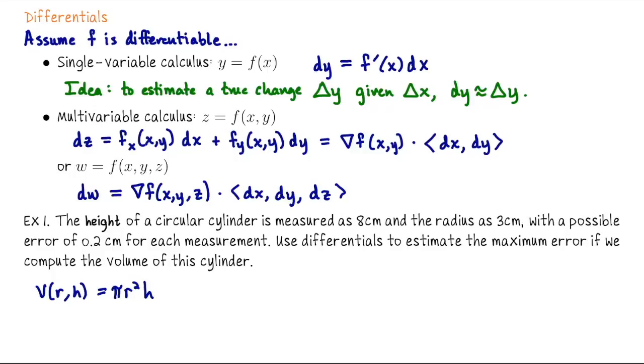To compute the differential, we need the gradient. The gradient is a vector of partial derivatives: ∂V/∂r = 2πrh and ∂V/∂h = πr², so ∇V = ⟨2πrh, πr²⟩.